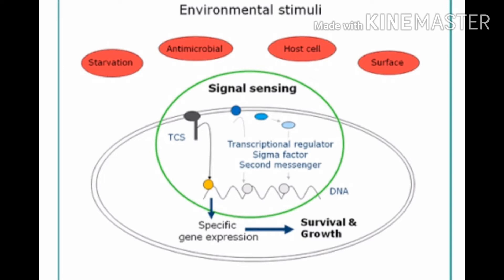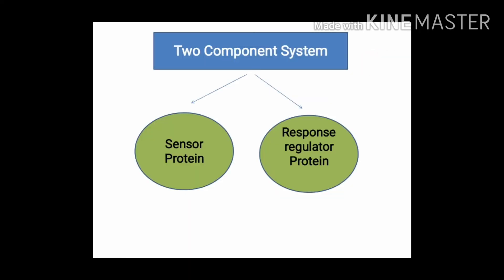It senses and responds using the two-component regulatory system. This two-component regulatory system is composed of two proteins named the sensor protein and the response regulator protein. Sensor protein, as the name suggests, is involved in sensing a change in the environment, and its function is to receive the signal from the environment and pass it on to the response regulator. Response regulator, as the name suggests, is involved in the response of the bacterial cell towards the environmental change, and its main function is to get the signal from the sensor protein and to bring about the cellular response.